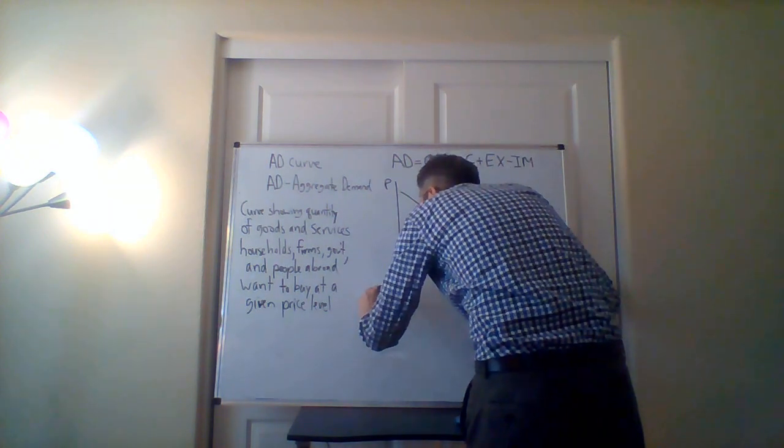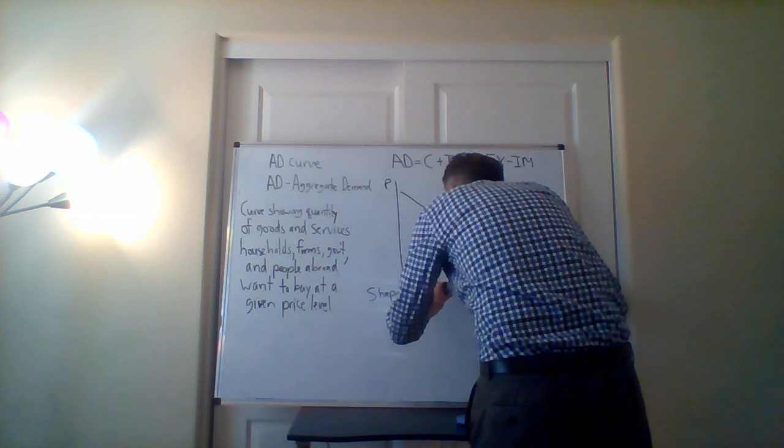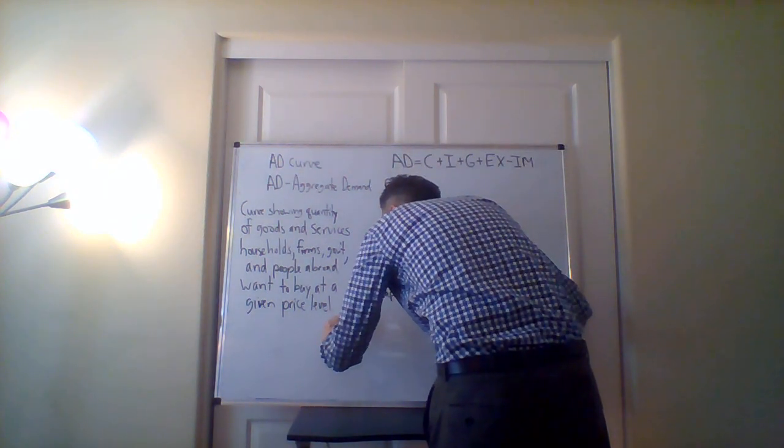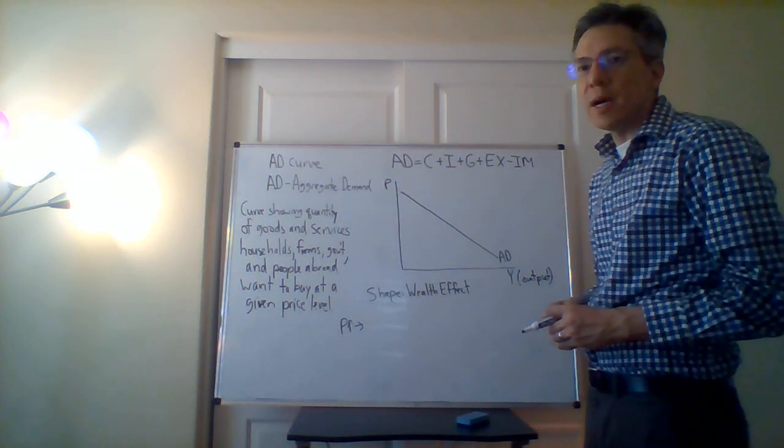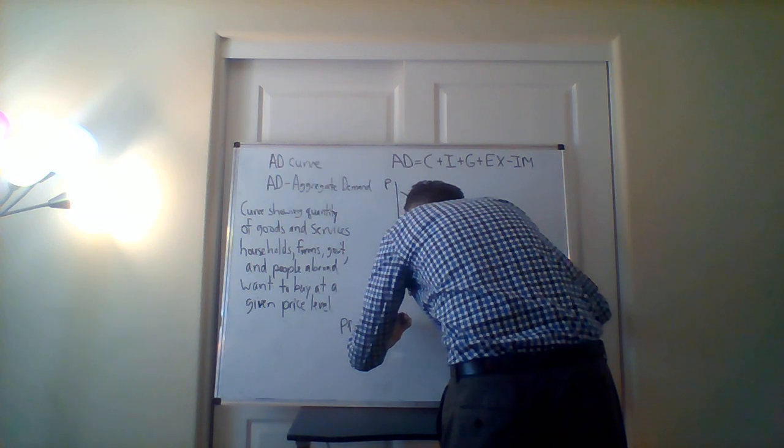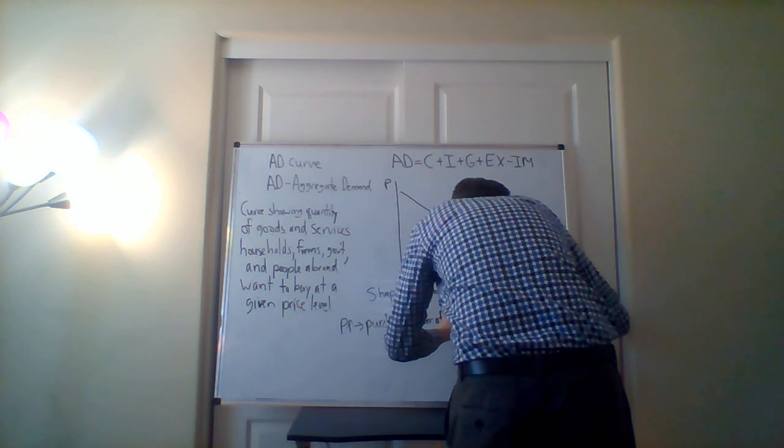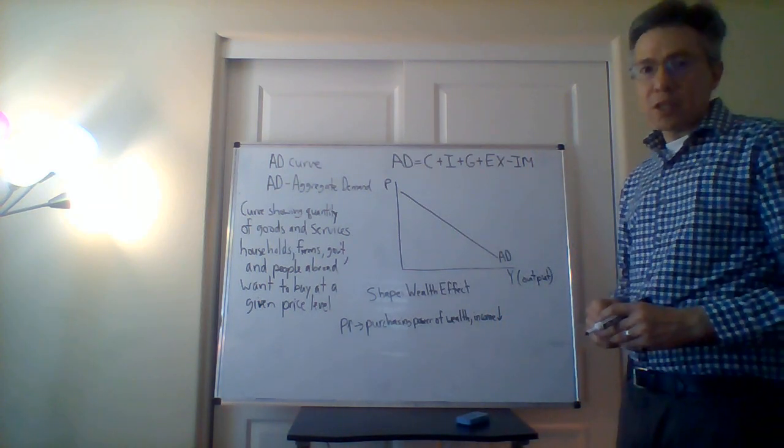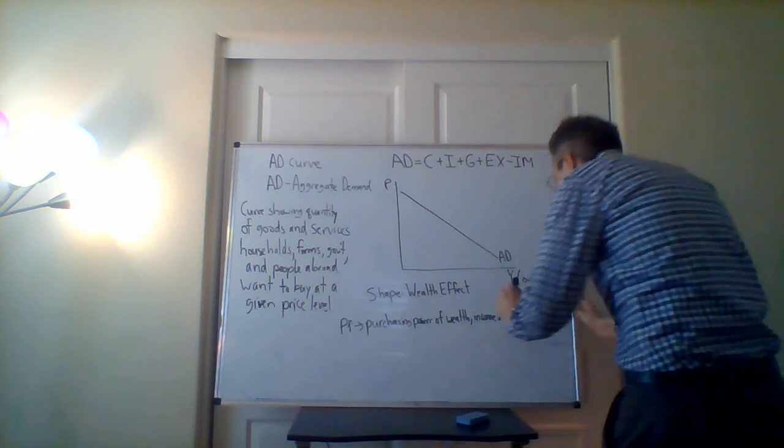So the idea is the shape can be explained by the wealth effect. So what happens? Essentially, when the price level increases, what can we say happens to the purchasing power of wealth and income? The purchasing power of wealth and income is going to go down. And so then what does that affect in terms of aggregate demand? This affects consumption.